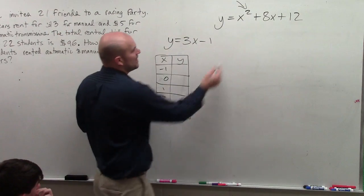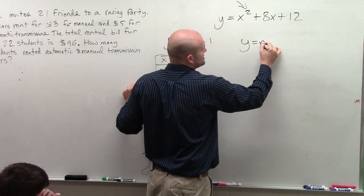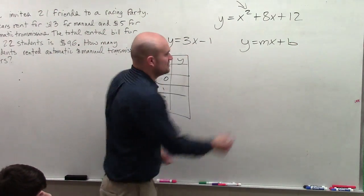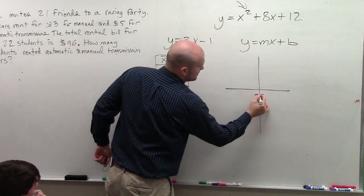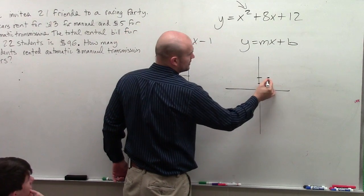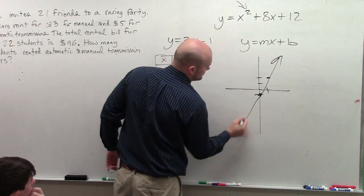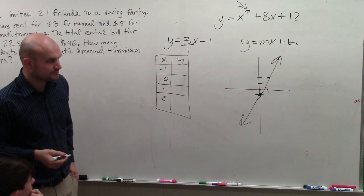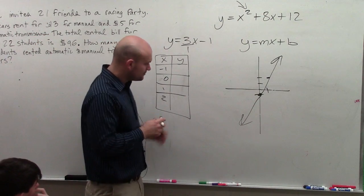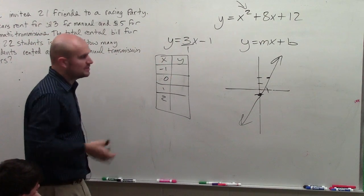So what we also found out was we could use slope-intercept form. Just find what m is, find what b is. Plot the point negative 1, and then use that as your slope: 1, 2, 3, over 1. And then you could connect. It was pretty simple. Or if it was in standard form, we use the intercept method.